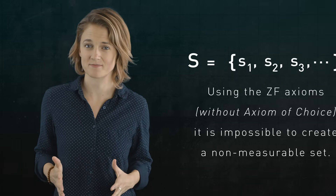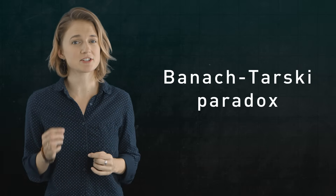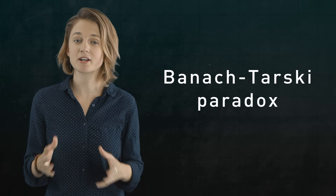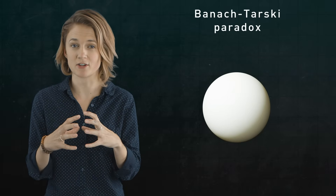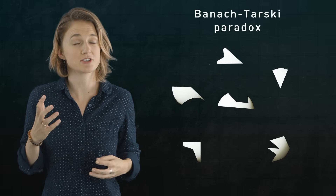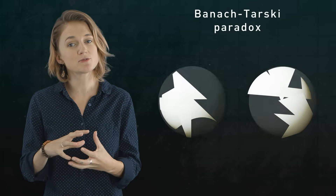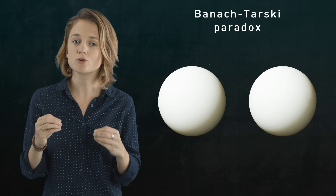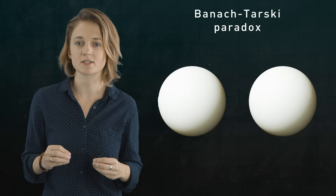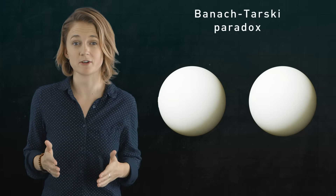In other words, using the basic ZF axioms, it's impossible to create a non-measurable set — a set without a size. A notable related result, and most people's favorite consequence of the axiom of choice, is the Banach-Tarski paradox. In the Banach-Tarski paradox, you take a solid sphere, break it into a finite number of pieces — actually as few as five pieces depending on the construction — and then put those pieces back together to form two solid spheres, each the same size as the original.